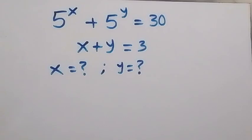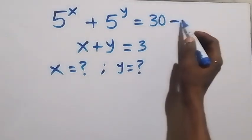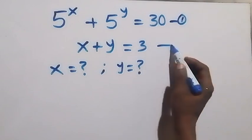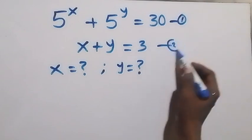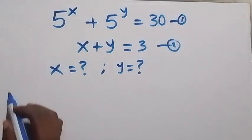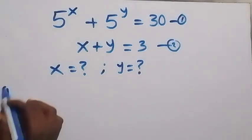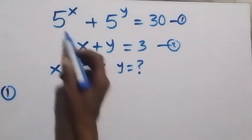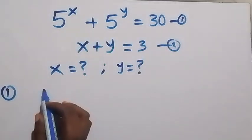Hello, you're welcome here. Let's solve this nice exponential system of equations. Let's call the first equation as equation 1 and the second as equation 2. From equation 1, we multiply both sides by 5 raised to the power x.